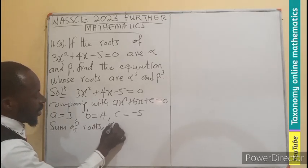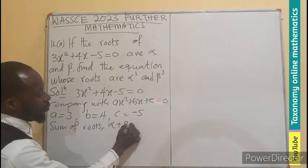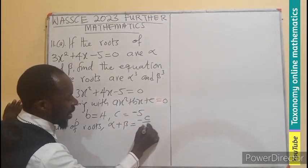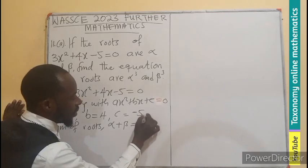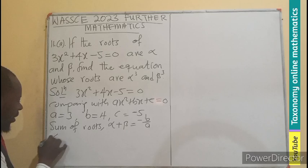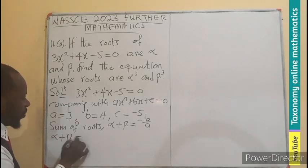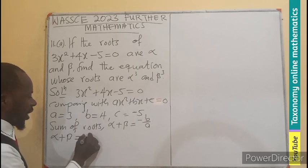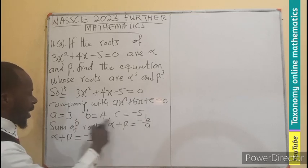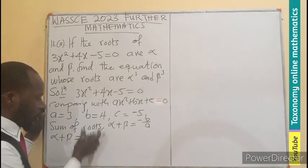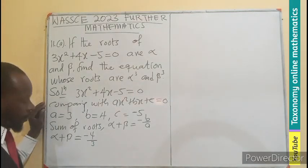α + β is given by -b/a, that is the sum of it. So in this case, our α + β is going to be -b, b is here, so -4/a, and a is 3. So that is the sum of the root, -4/3.